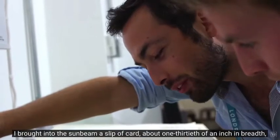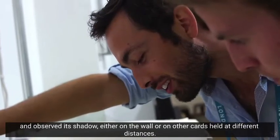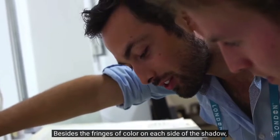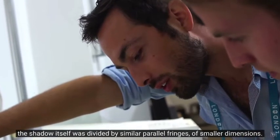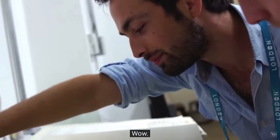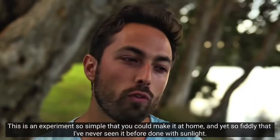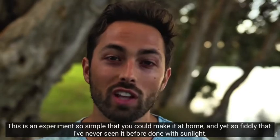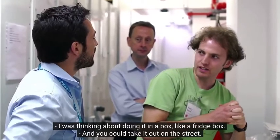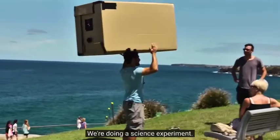I found Thomas Young's handwritten notes from 1803. I brought into the sunbeam a slip-up card, about one-thirtieth of an inch, and observed its shadow either on the wall or on other cards held at different distances. Besides the fringes of colors on each side of the shadow, the shadow itself was divided by similar parallel fringes of smaller dimensions. This is an experiment so simple that you can make it at home, and yet so fiddly that I've never seen it before done with sunlight. I was thinking about doing it in a box, like a fridge box. Taking it out on the street.